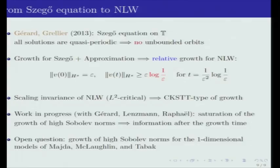Finally, let me finish with two comments. There's a work in progress going on with Gérard, Lenzmann, and Raphaël where we're trying to investigate the saturation of the growth of Sobolev norms. We're trying to see what happens after this growth time. Essentially, what we want to prove is that the Sobolev norms will not become small again—they will not go to infinity either, but they will stay large. And then, once we have all this information about this half-wave equation, the natural open question would be to now go to the other models from Majda, McLaughlin, and Tabak and see if there we can rigorously prove this growth of high Sobolev norms. I will stop here. Thank you for your attention.